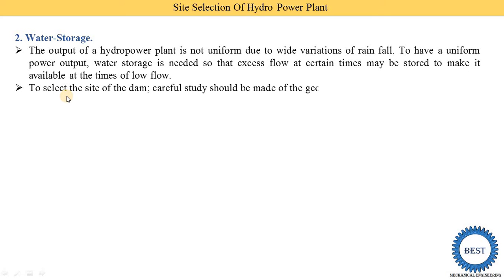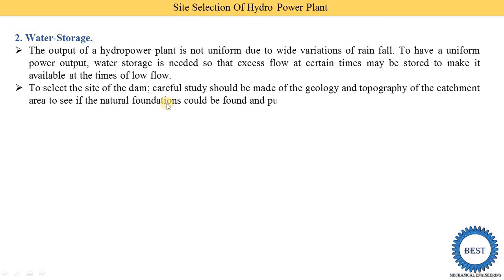To select the site of the dam, a careful study should be made of the geology and topography of the catchment area to see if a natural foundation can be found and put to the best use. We need to check the data of the catchment area — the minimum and maximum rainfalls — and also conduct a topography analysis for water storage.